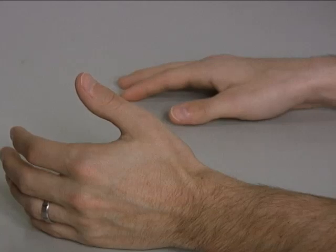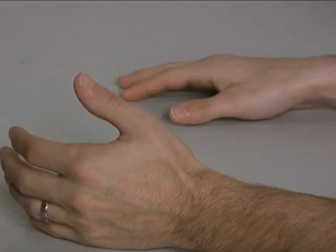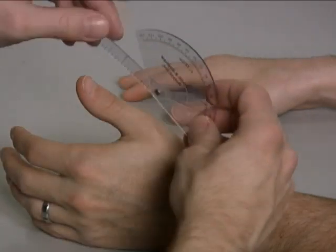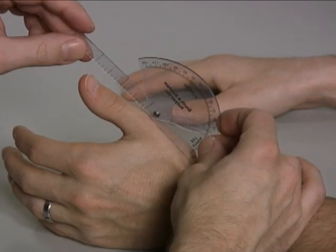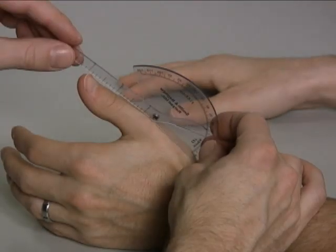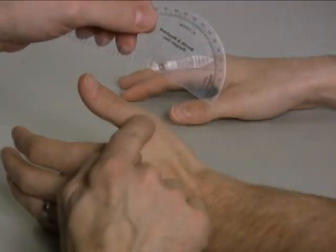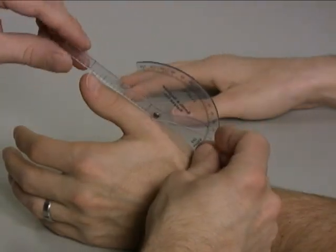To measure thumb metacarpophalangeal joint extension to flexion, the patient is seated at the table with hand on the table. You will place the goniometer on edge on the back of the thumb with the axis of the goniometer centered over the metacarpophalangeal joint.